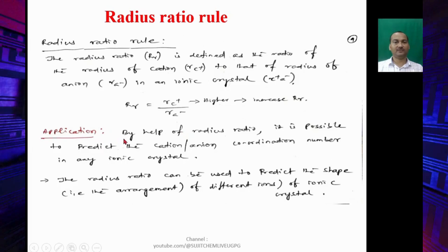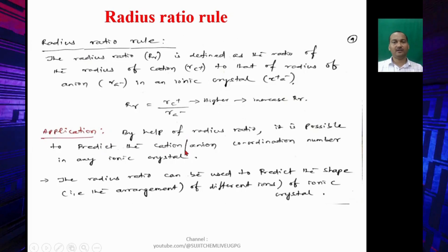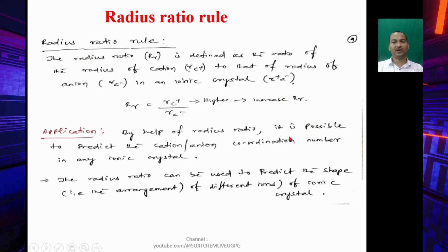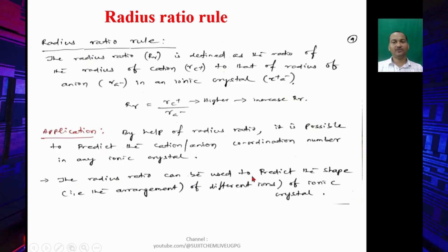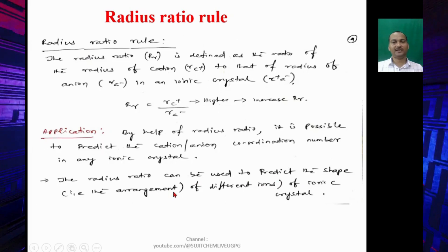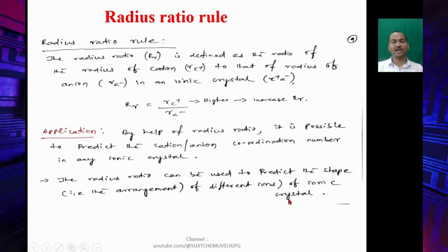Application: By help of radius ratio, it is possible to predict the cation-anion coordination number in any ionic crystal. The radius ratio can be used to predict the shape, that is the arrangement of different ions of an ionic crystal.